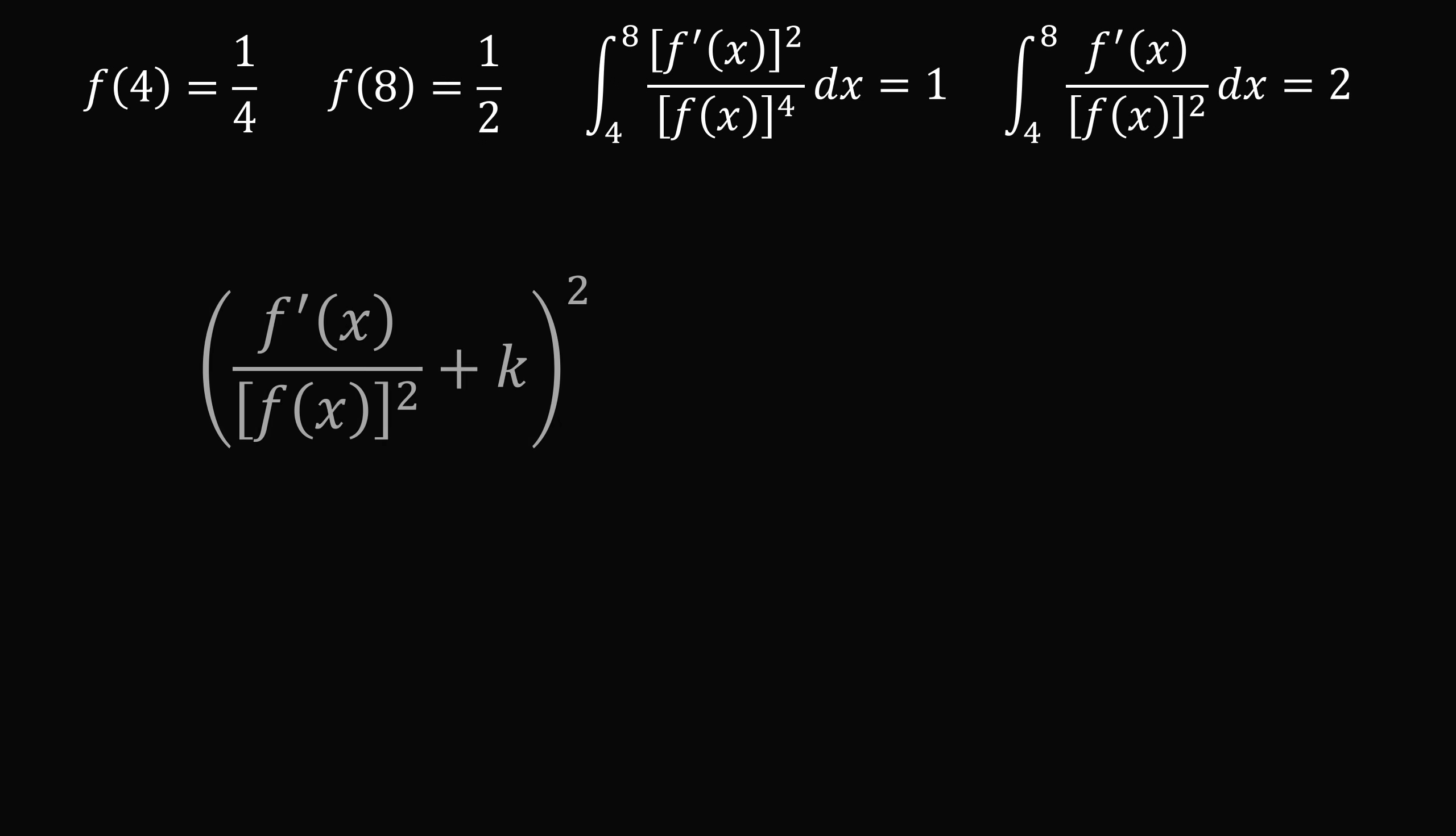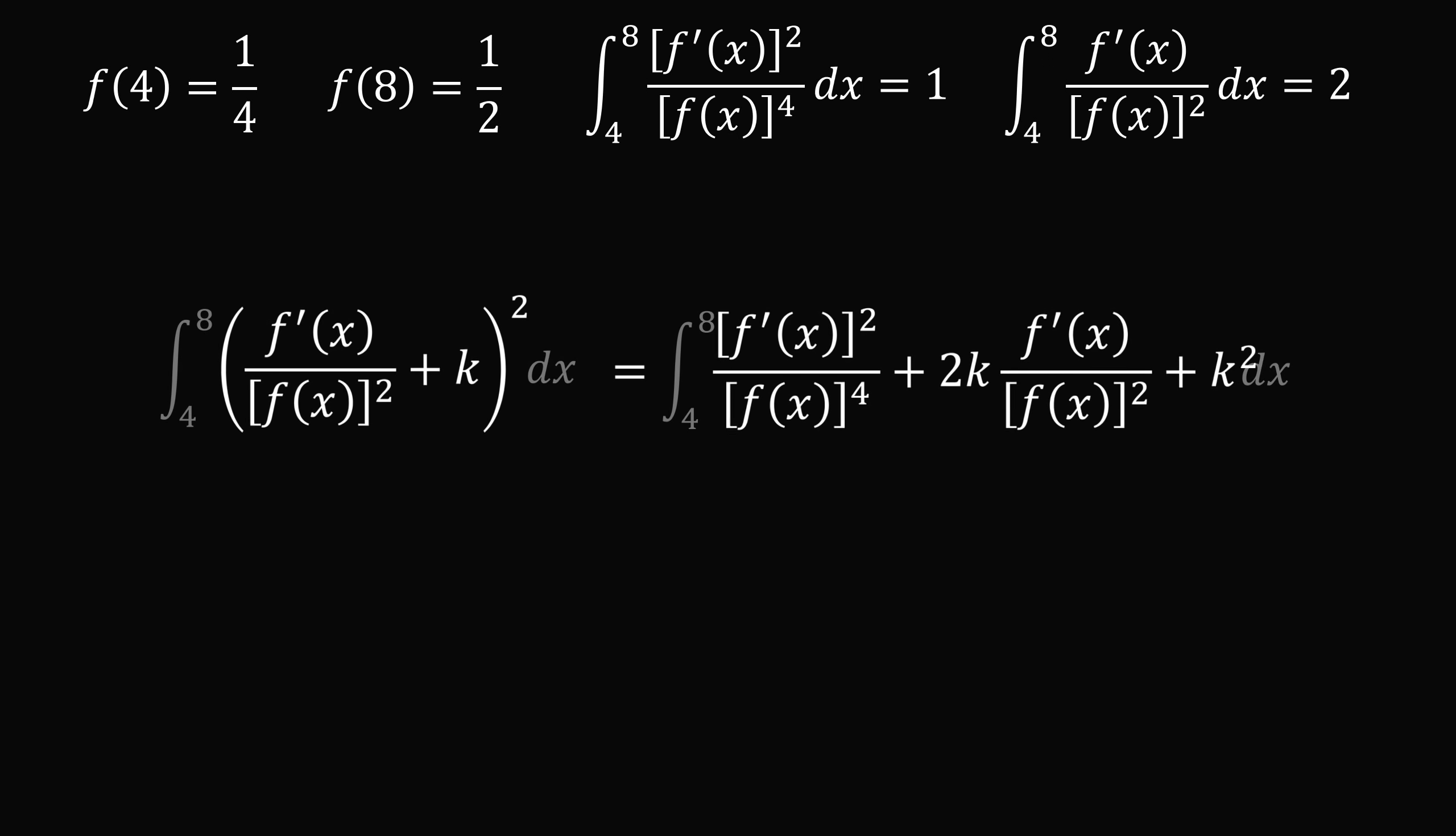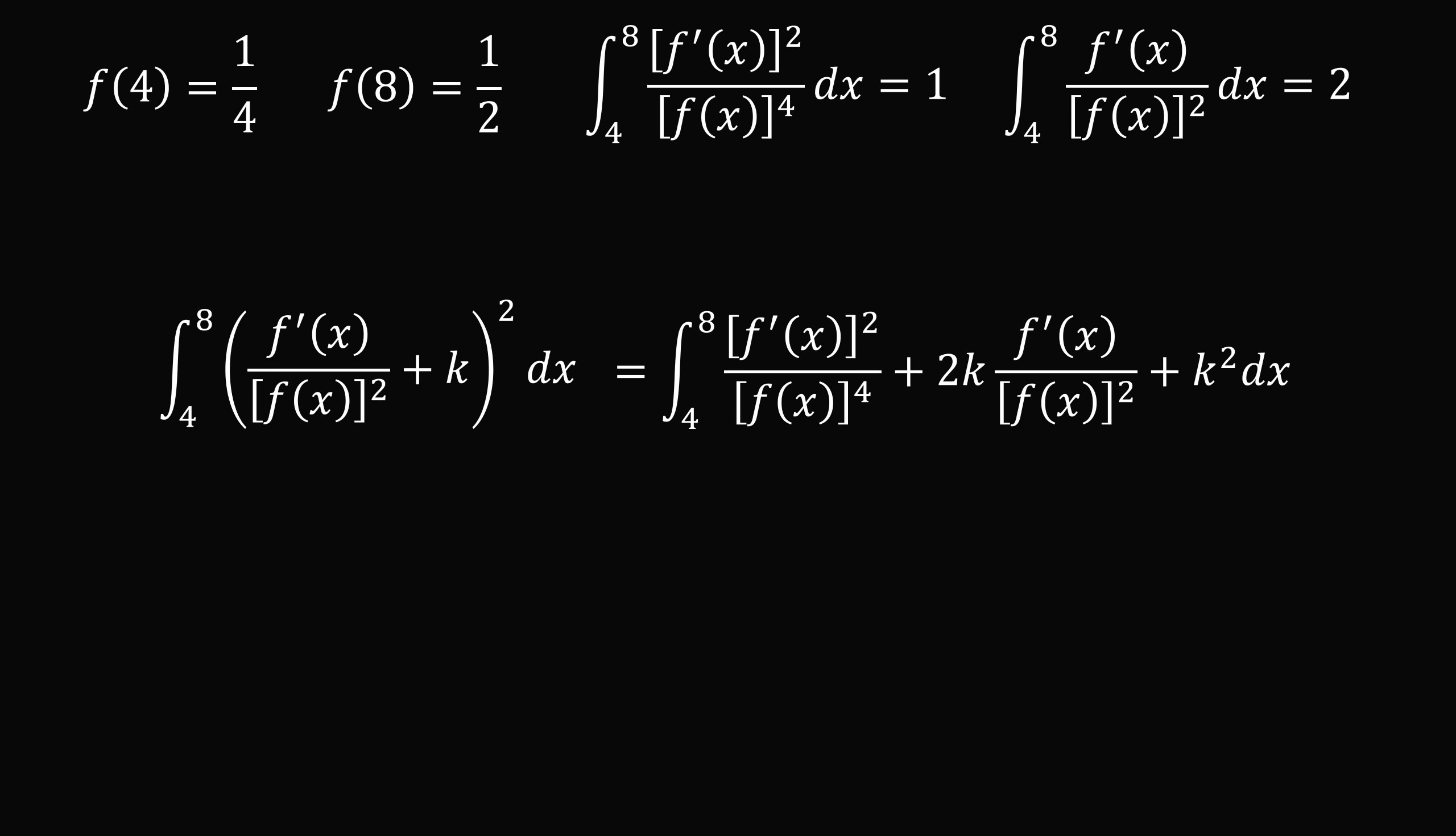From here, let's consider the square of f'(x) divided by [f(x)]² plus k for some constant k. We can expand this binomial. Now, let's take the integral of both sides from 4 to 8. The integral of a sum is the sum of the integrals. We can then take the constant terms outside of the integral.